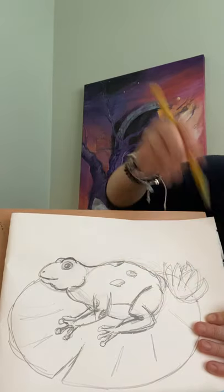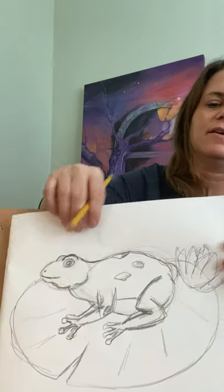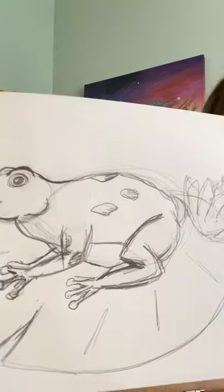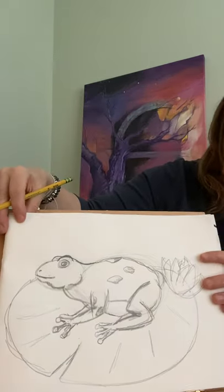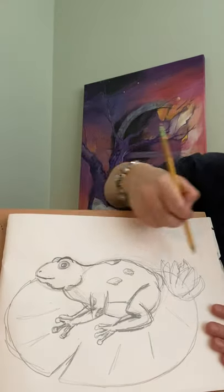So we have this little, and remember, we're drawing kind of lightly so we can always go back in. All right. Can you see that? What I just did? Okay. He's like a friendly looking frog. He looks like he's going to hop right off that lily pad.